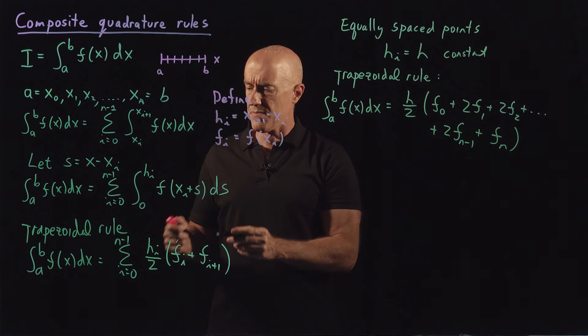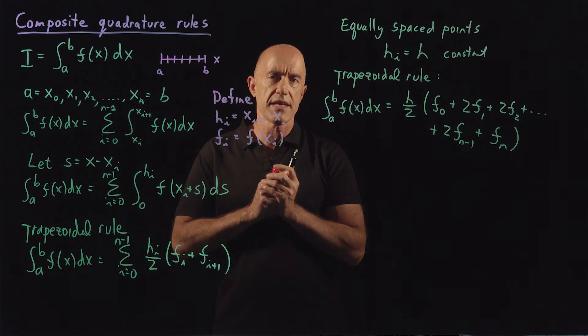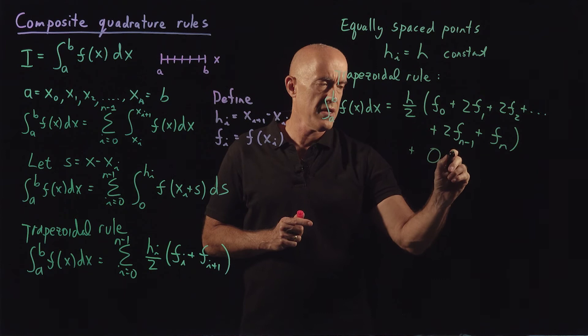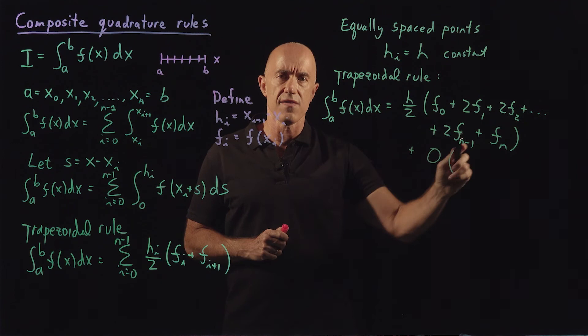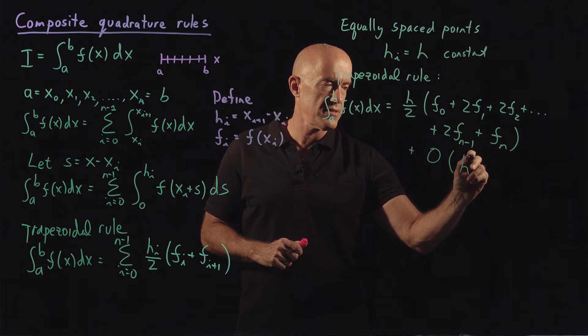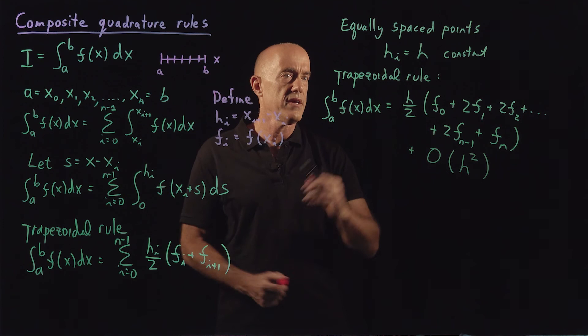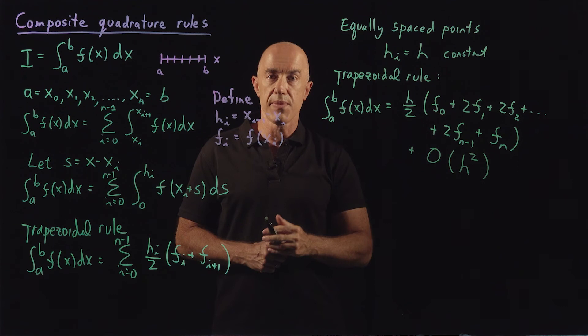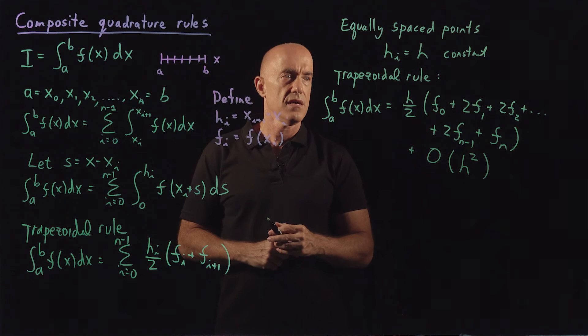The elementary integration formula for the trapezoidal rule had an error of O(h³), but since we're adding up n of those errors, the composite rule has an error larger by a factor, giving O(h²). So typically, people say the trapezoidal rule has error O(h²), and they're referring to the composite trapezoidal rule.